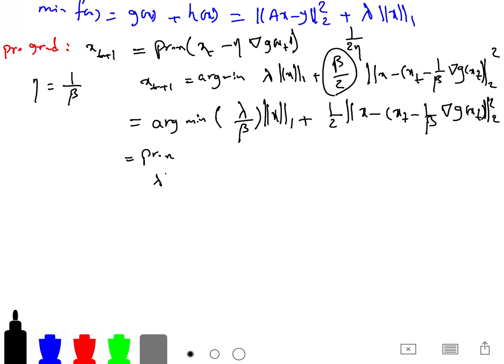And this is the proximal. We can write it as proximal of lambda over beta norm of (x_t minus eta g(x_t)), so it looks more familiar.